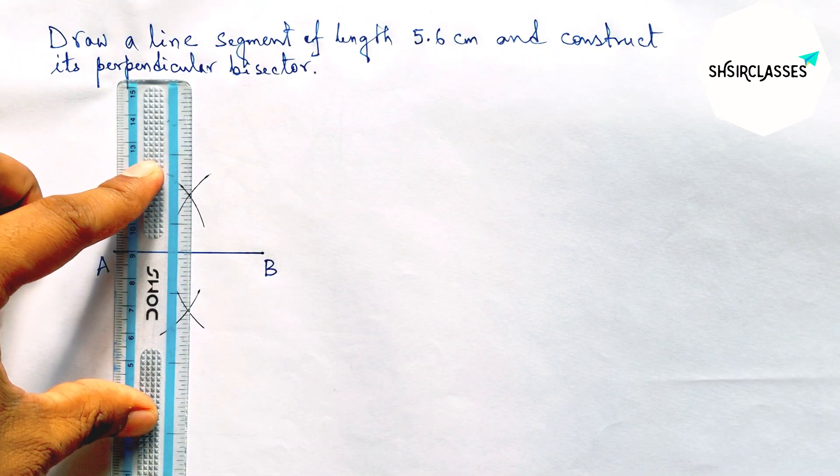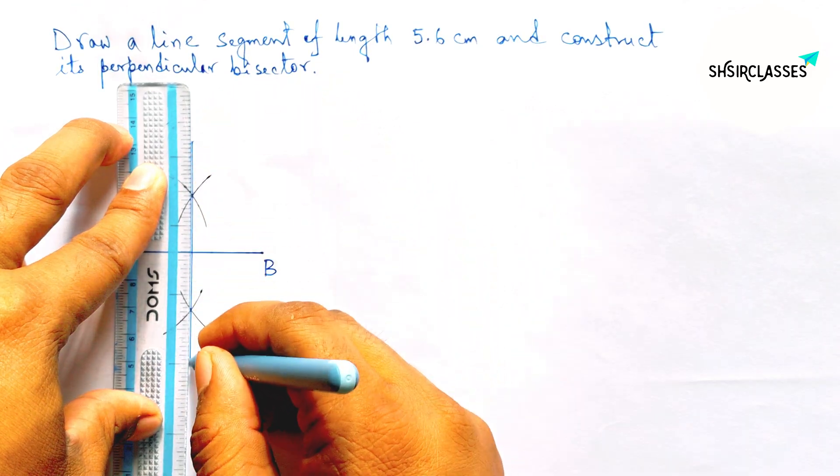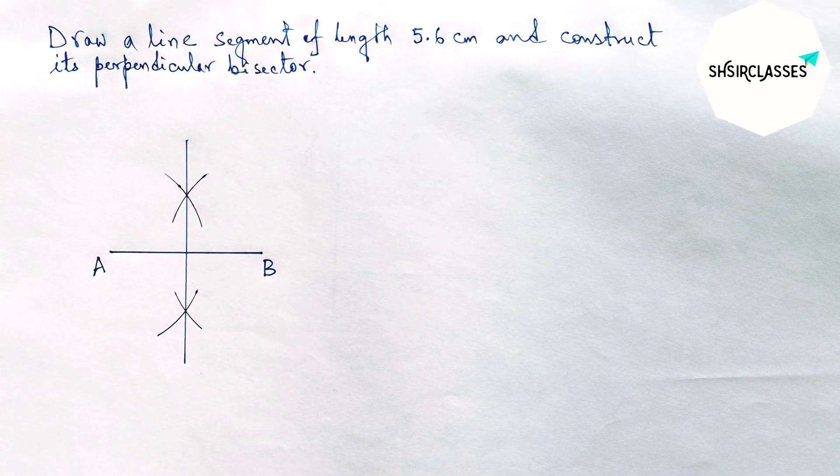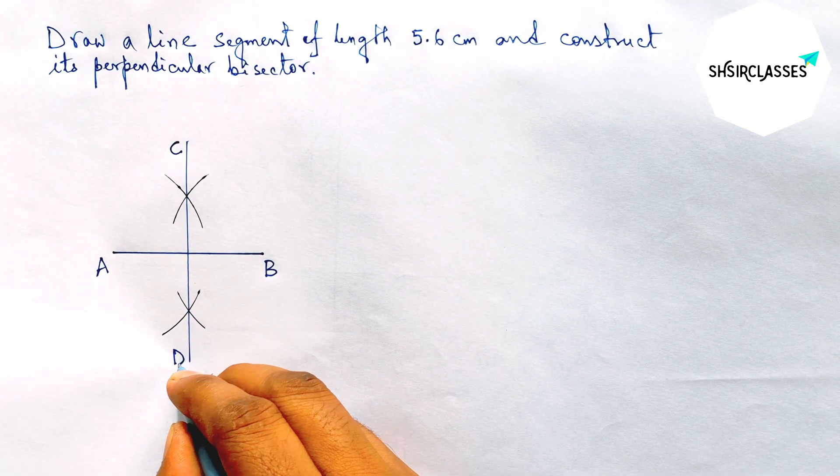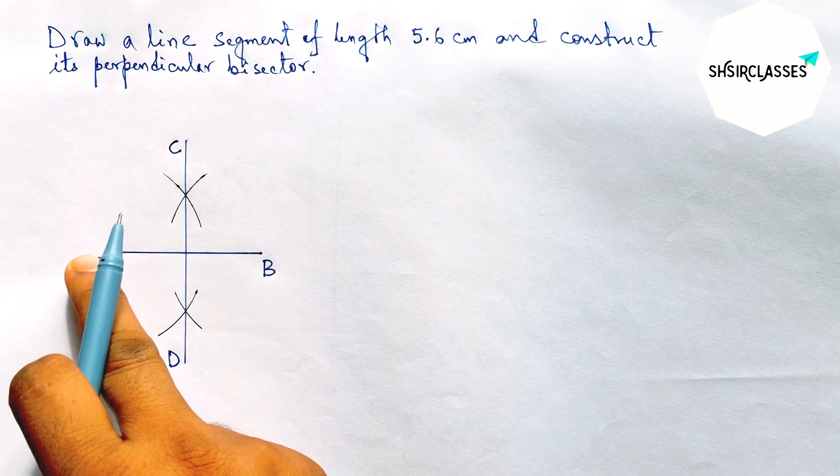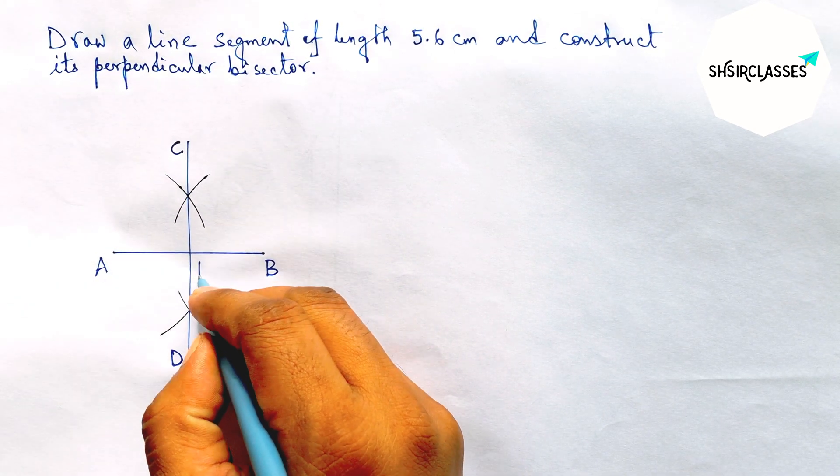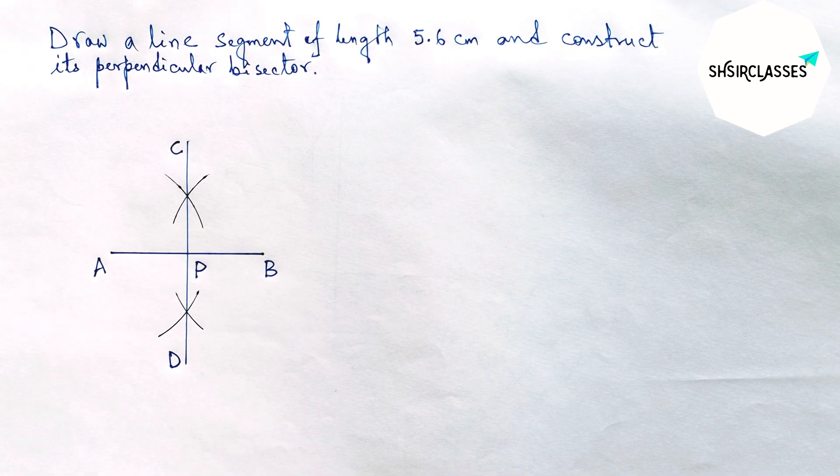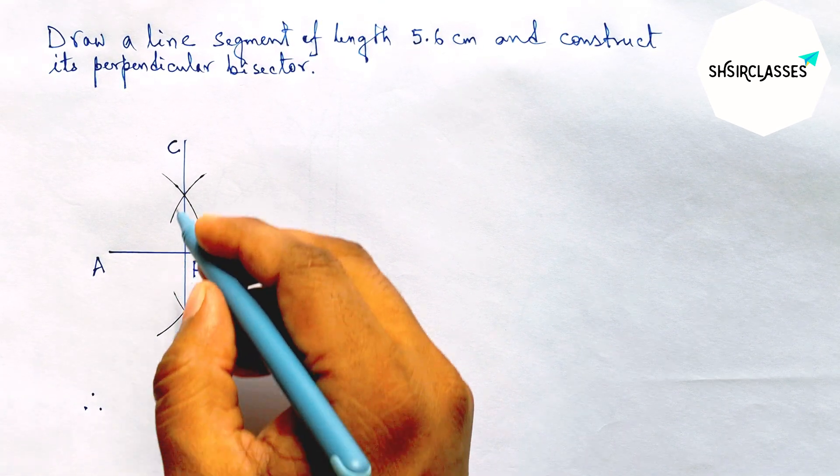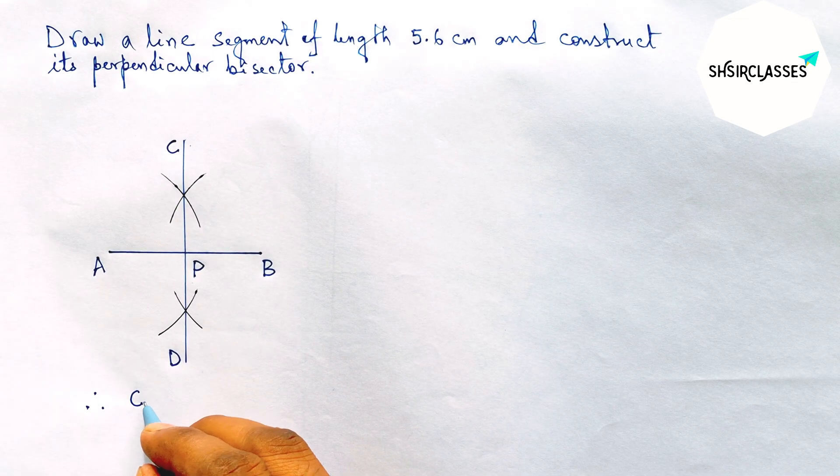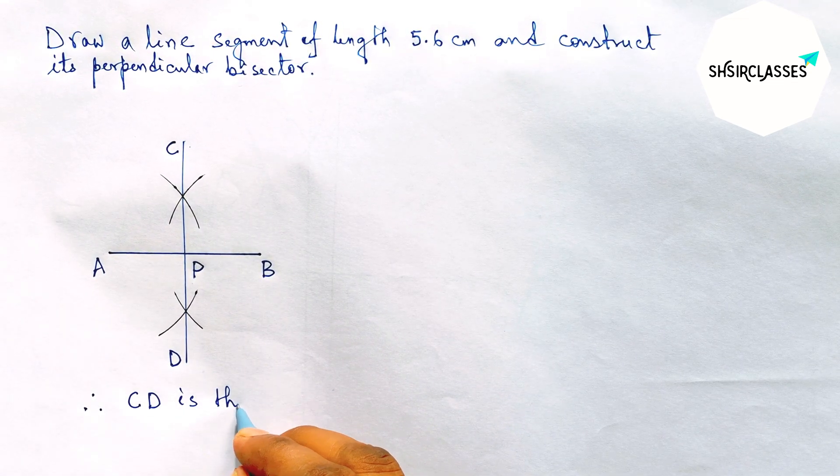Okay, now joining this. And this is the required perpendicular bisector, so labeling here C and here D. Now AB and CD meet at a point, so taking here point P. Therefore CD is the required perpendicular bisector.